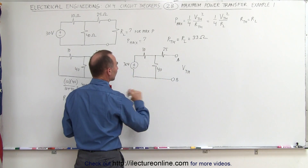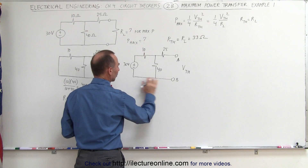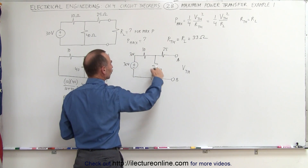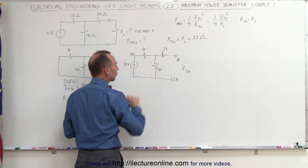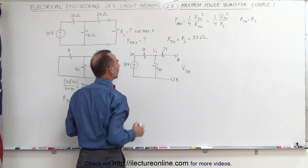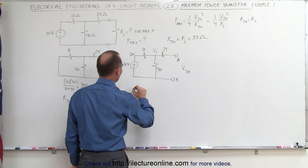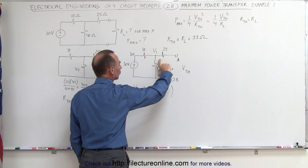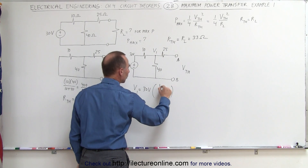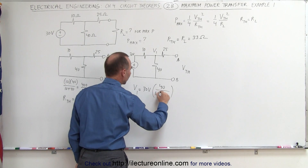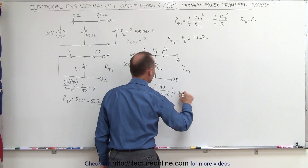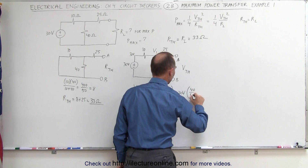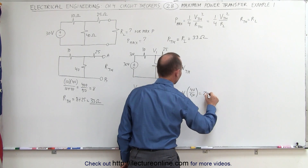We can look at this as a voltage divider. Assuming the voltage at B is zero, the voltage drops between 30 volts and zero across the 10-ohm and 40-ohm resistors. The voltage at V1 is equal to 30 volts times 40 divided by the total resistance of 10 plus 40, which is 30 volts times 40 divided by 50, which is 0.8, giving us 24 volts.